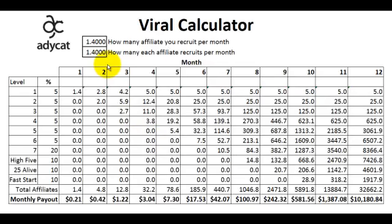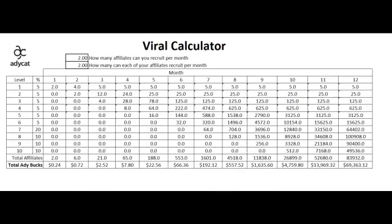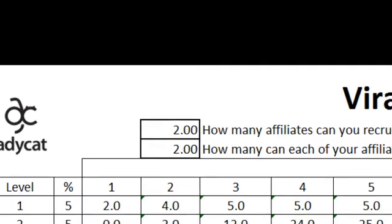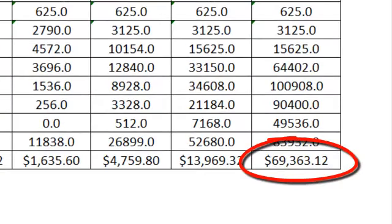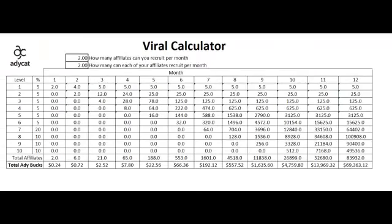This is another example of a good use for the viral calculator — it allows you to play around with the numbers and see what's possible if you go beyond the minimum. Here you can see that if you recruited just 2 people per month, and everybody you recruited also recruited 2 people per month, at the end of 12 months you would be making $70,000 a month. That's a huge amount of money. As you can see, this forced-5-sales system has huge potential to get big fast.